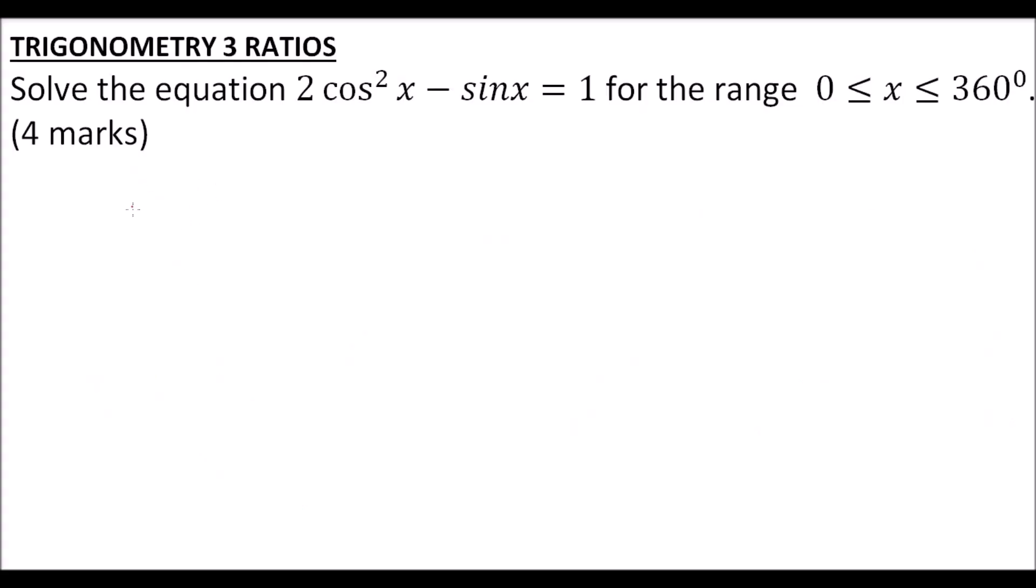This is a trigonometry question. We are told to solve the equation 2 cos²x - sinx = 1 for the range 0 ≤ x ≤ 360 degrees, which is worth 4 marks.